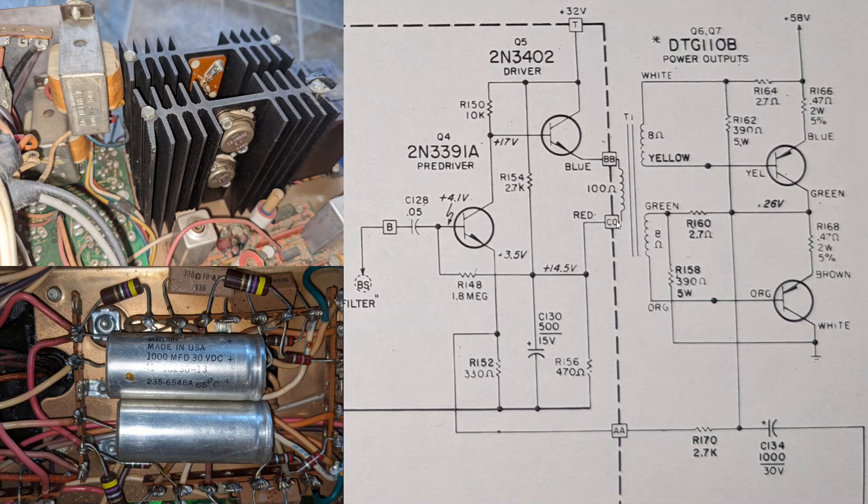The input is transformer coupled. That's T1 right here. Physically, this is one of the transformers here. Again, one for left, one for right. The output is capacitively coupled. See this 1,000 microfarad 30 volt capacitor, which is seen right here. Again, transformer coupled input, capacitor coupled output. The speaker would appear right here going to ground.